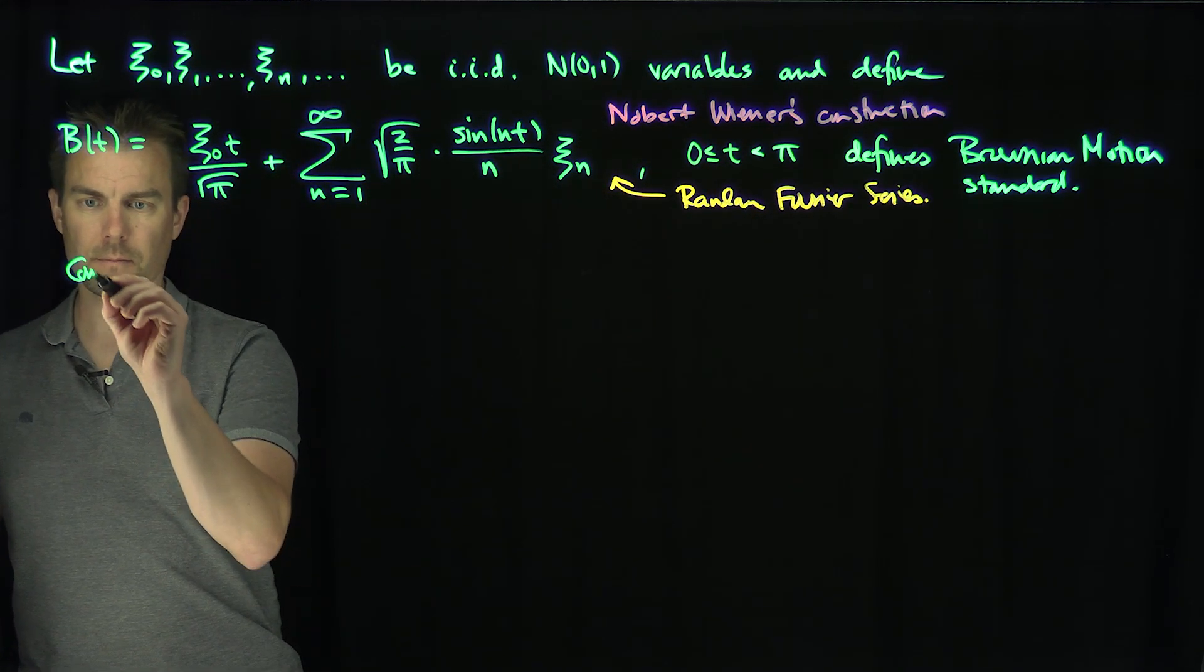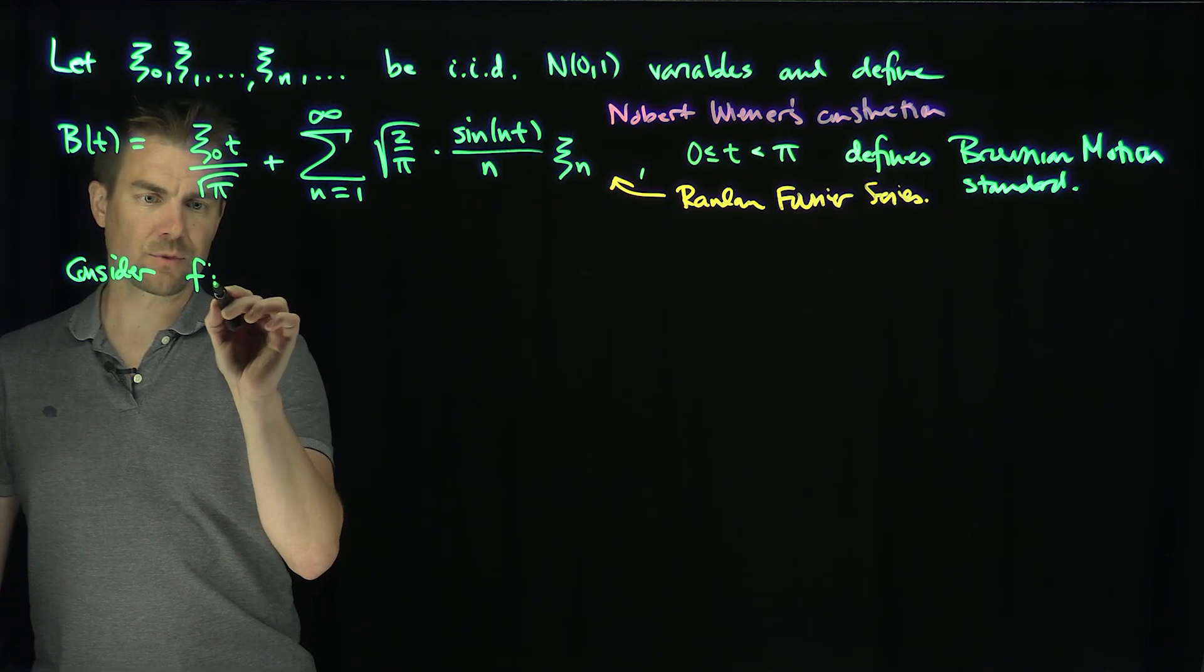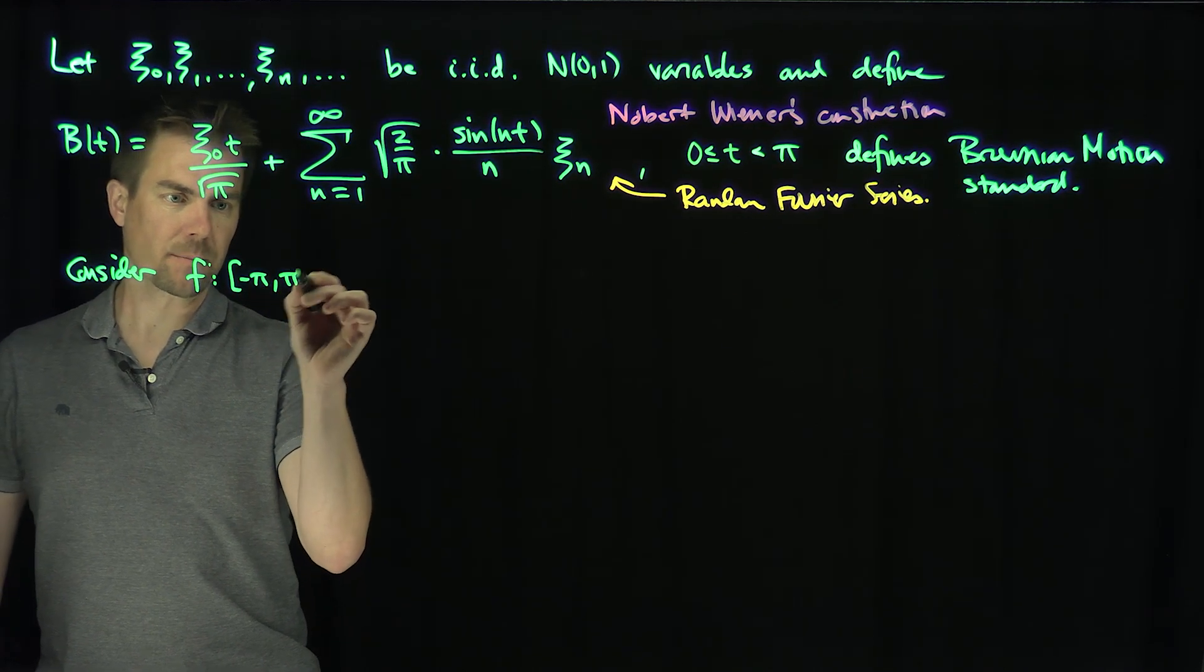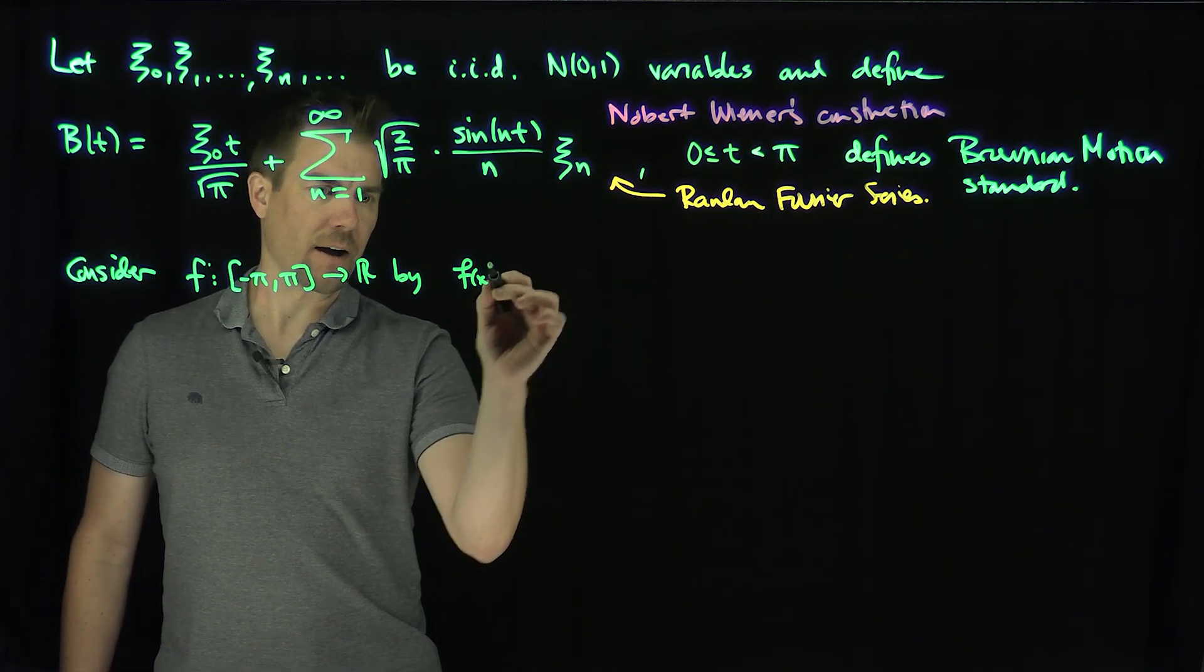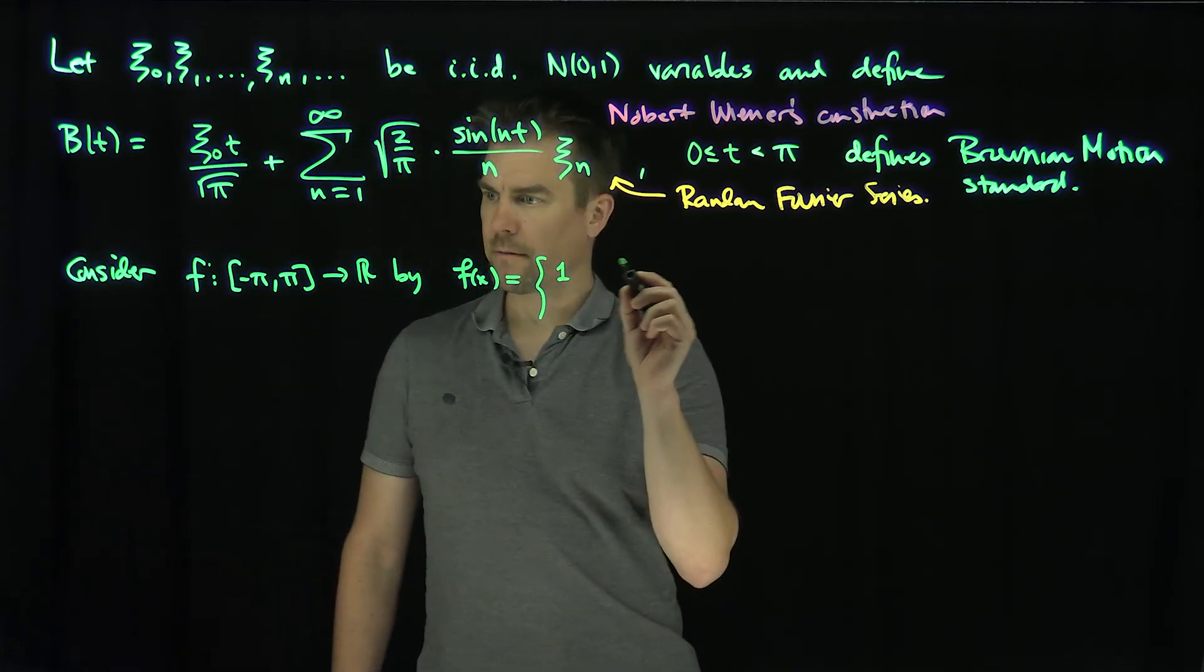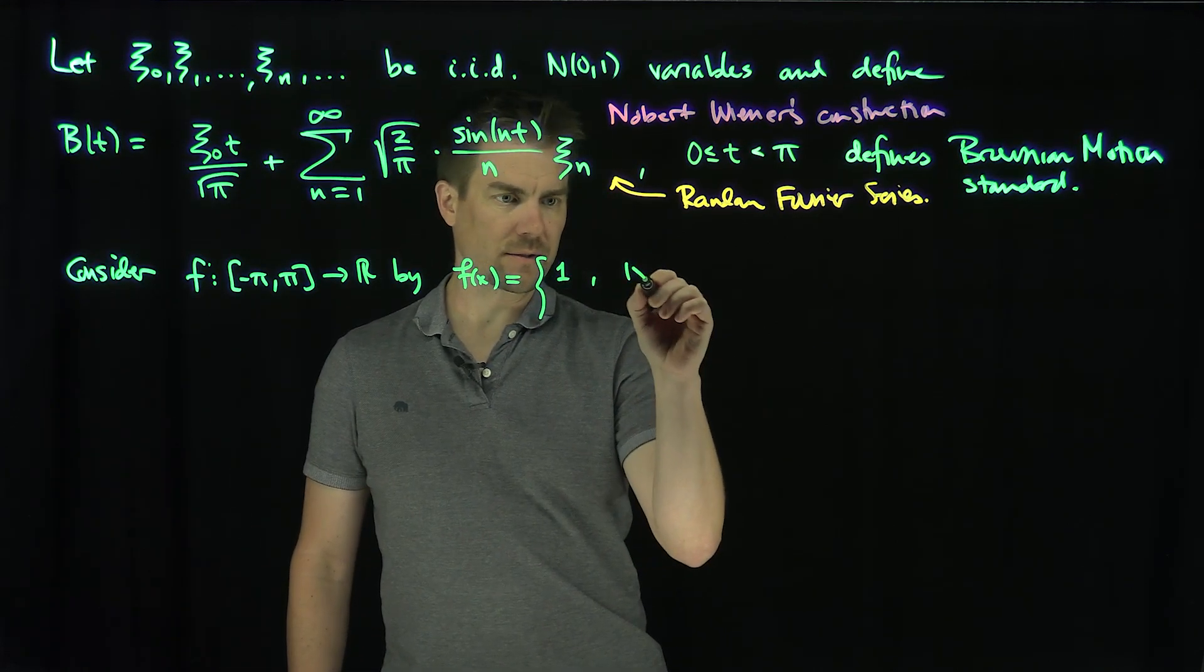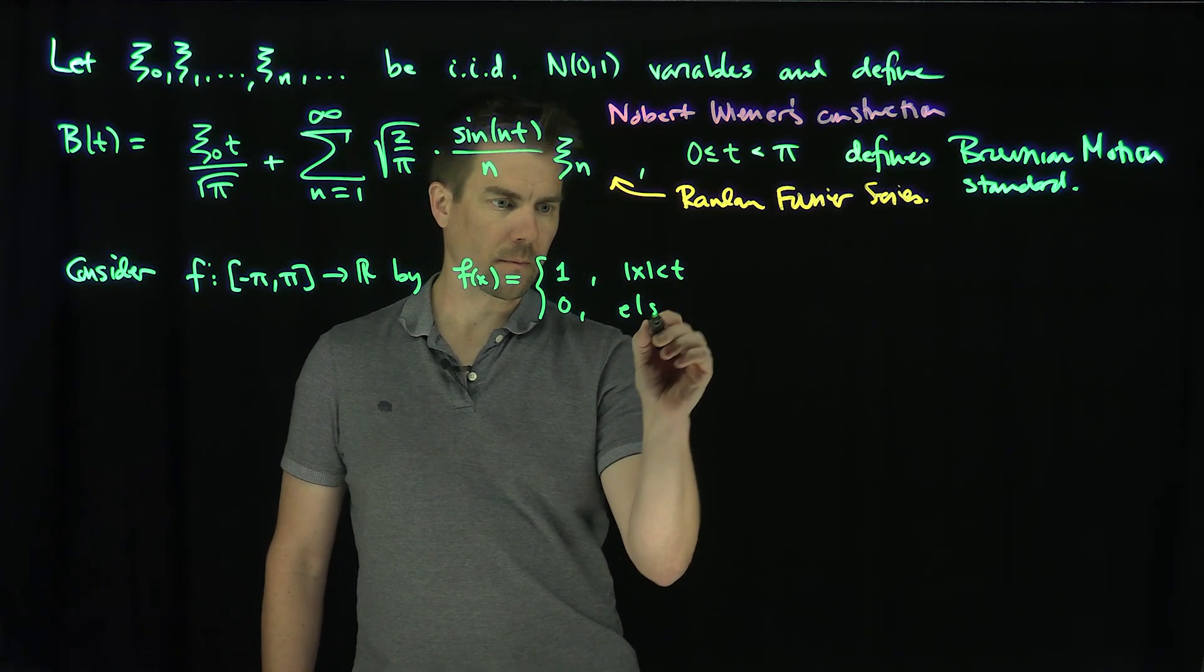So let me consider f(x), f which maps [-π, π] into ℝ by f(x) is going to be equal to 1 if x is less than t, t is a parameter now, and 0 else.